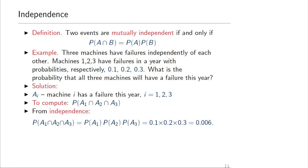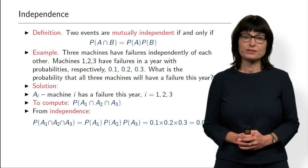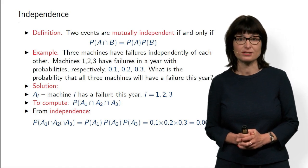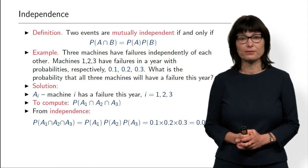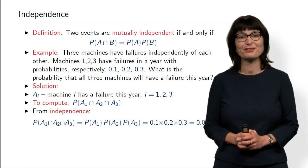Because we assumed the events are independent, we could write the probability of intersection equal to the product of probabilities. If the events were dependent, we would have to use the multiplication rule with conditional probability. But in this case, these machines don't tell anything about each other, so the multiplication rule simplifies. That is all for today, and at the next micro lecture we will continue with how else conditional probability can be used to compute probabilities of more complex events. Thanks for your attention.